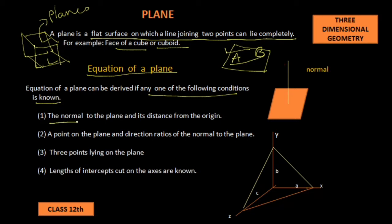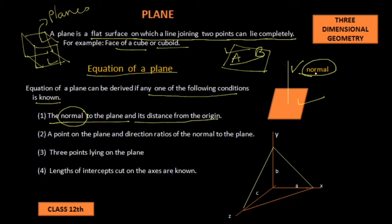First condition: the normal to the plane and its distance from the origin. In this figure, this is a plane and this line is perpendicular to the plane. This perpendicular line is called the normal.